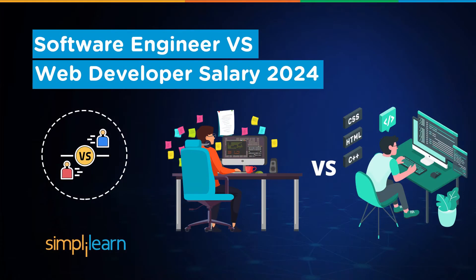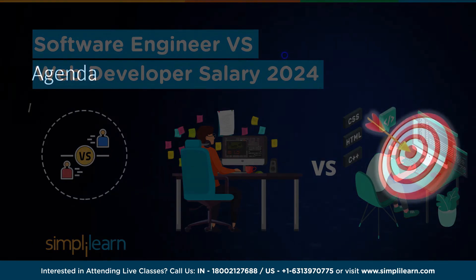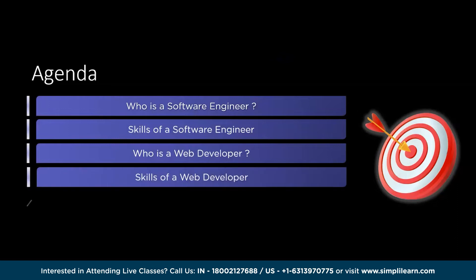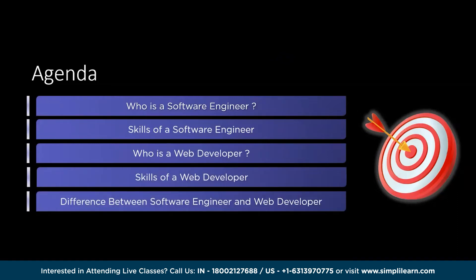In today's digital age, the roles of software engineers and web developers have become increasingly vital. Both professions play a crucial role in shaping the technological landscape we live in. They are essential but differ in their focus, responsibilities, and skill sets. In this video we will explore the definitions, skills, differences, project types, industry demands, lifecycle, and salary aspects of software engineers and web developers.